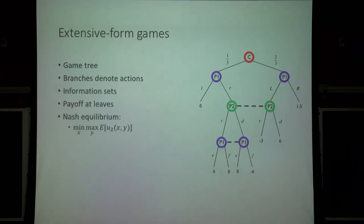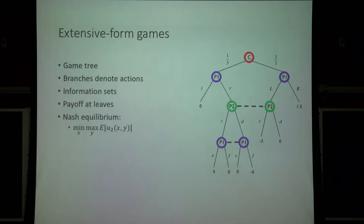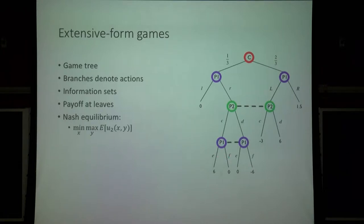What is an extensive form game? It consists of a game tree such as the one I'm showing here. Each node belongs to some player — player one, player two, or chance — and chance always moves with fixed probabilities. For any given node, the branches denote actions for the player; for example, player one can go left or right. We also have information sets: groups of nodes belonging to the same player such that the player can't distinguish which node they're at. For example, player one has an information set of two nodes denoted by a dotted line. Finally, we have payoffs at leaves, and since this is a zero-sum game, we have a single value representing utility to player two. Player two always wants to maximize the expected value; player one wants to minimize it.